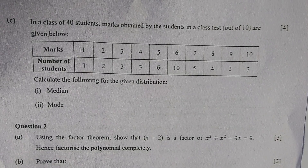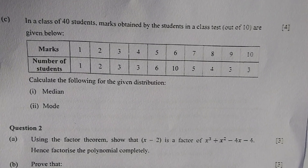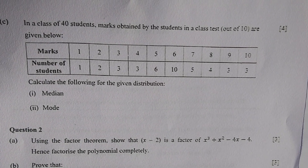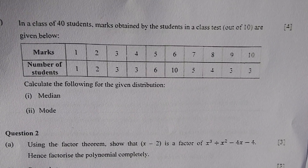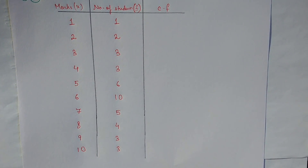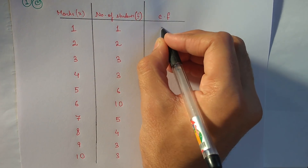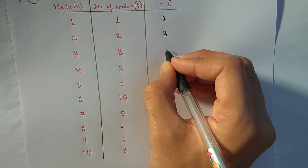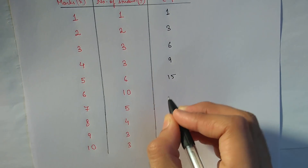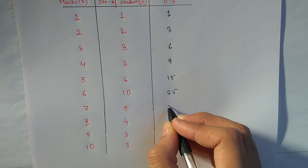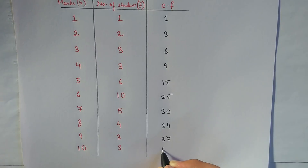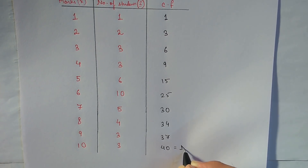Moving on to part C. In a class of 40 students, marks obtained in a class test out of 10 are given. We have to calculate the median and the mode. Let's calculate the cumulative frequency: 1, 3, 6, 9, 15, 25, 30, 34, 37, 40. The total is 40, which corresponds to marks up to 10.